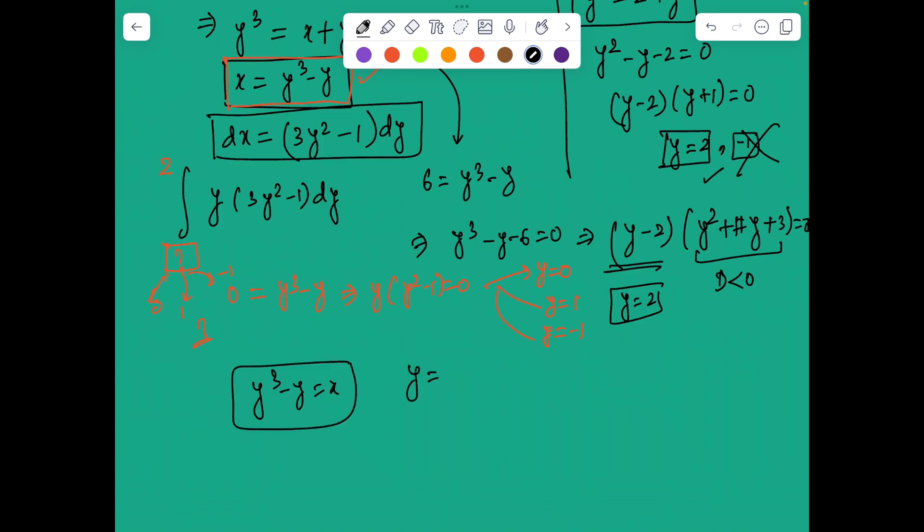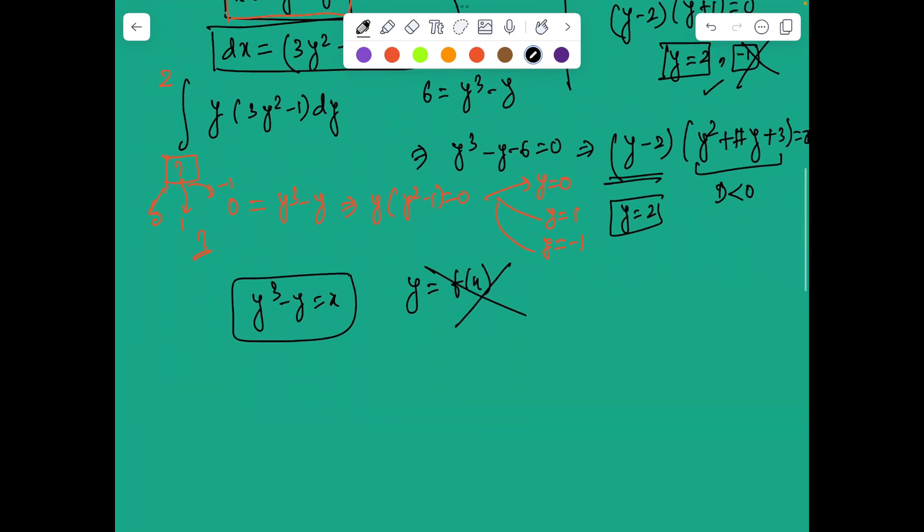Y cubed minus y equal to x. There is no good form of relation y as a function of x here. So that is difficult to find over here, if not impossible. It can be done explicitly using Cardano's method, but I'm not going into those details. But what I'll do is I'm reflecting this curve y cubed minus y equal to x along the line y equal to x.